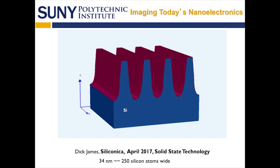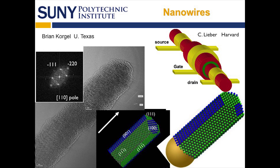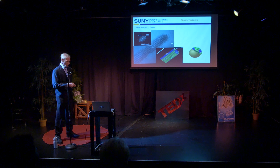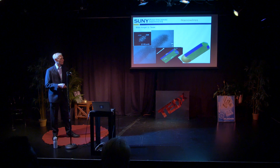Why do they call them fins? Instead of looking straight on at them, you look at them in perspective and you can see that they look like long shark fin-like structures, often patterned in an array. People were imagining something beyond just these fin transistors. They were thinking they could make nanowires. Someone I know well, Brian Corgill at University of Texas, was making nanowires of germanium with a certain crystal structure — grown using tiny little gold particles in a reactor.